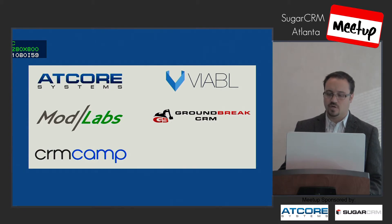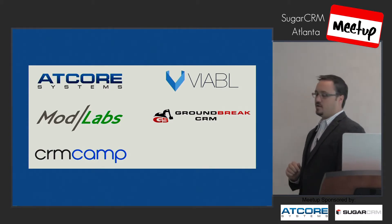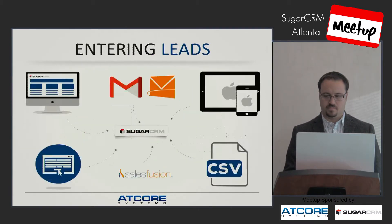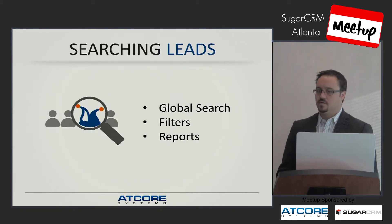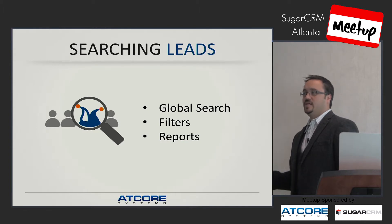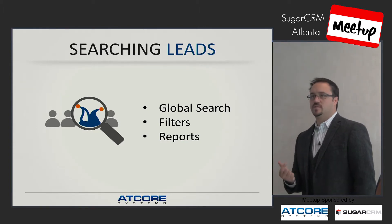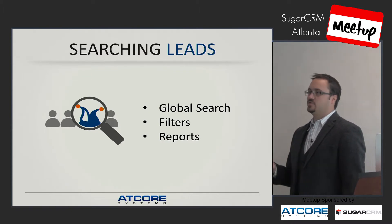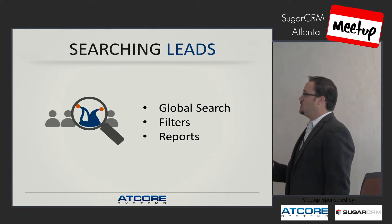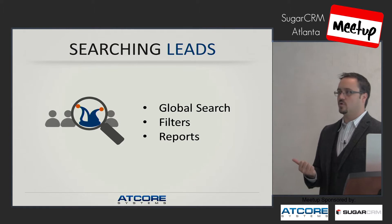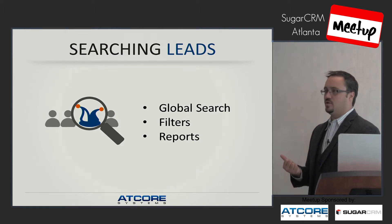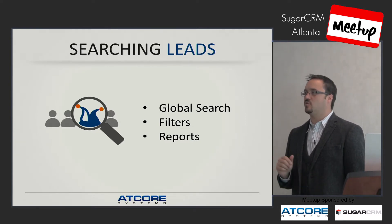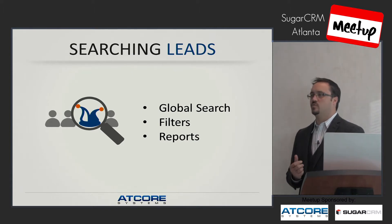The last thing we're going to talk about is searching leads. We went through the various ways to view leads — reports, dashboards, list views, target lists — and now we want to look at how do you search these leads to get to the ones you want. You have global search, filters, and reports. I'm not going to go into reports in depth — you can look at the AtCore Systems YouTube channel or search SugarCRM reports on YouTube for great videos. Reports are where you get into really complex filtering.